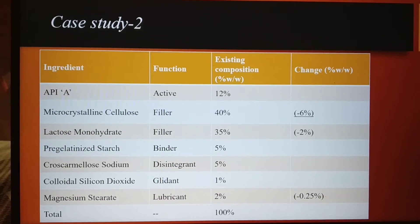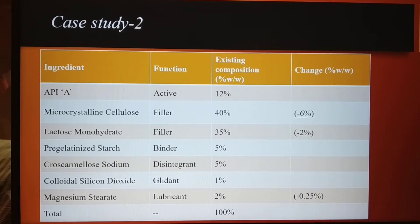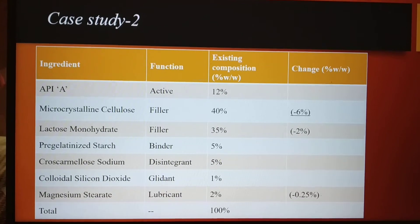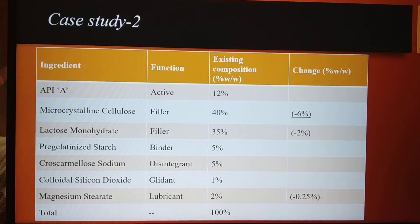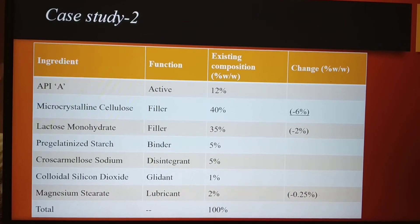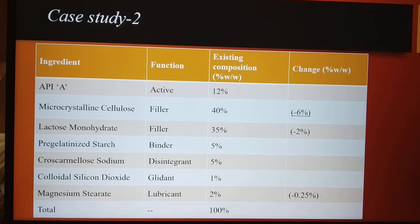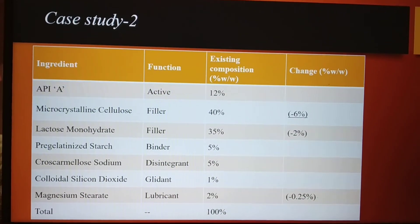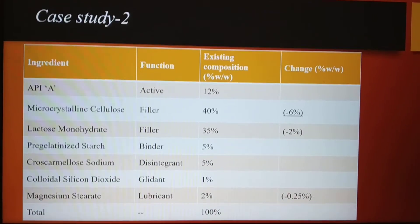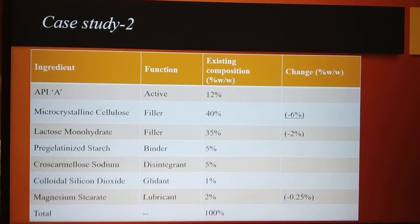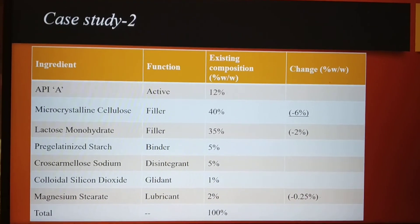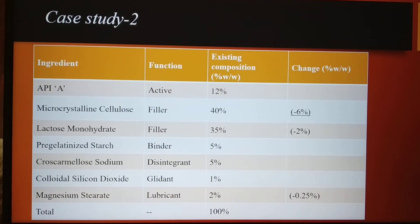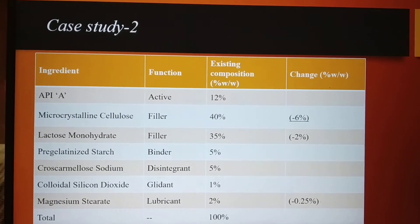Coming to Case Study 2, here you can see the microcrystalline cellulose has been changed up to 6%, lactose — which is also a filler — is changed by 2%, and the magnesium stearate concentration is changed by 0.25%. Now it's your turn to predict the change and share your views in the comment box. You can pause the video and write your comment.